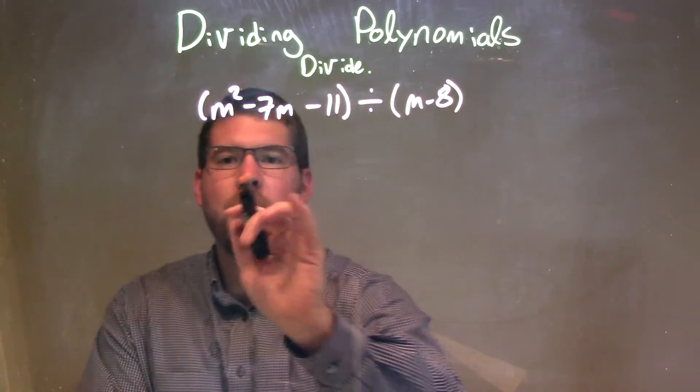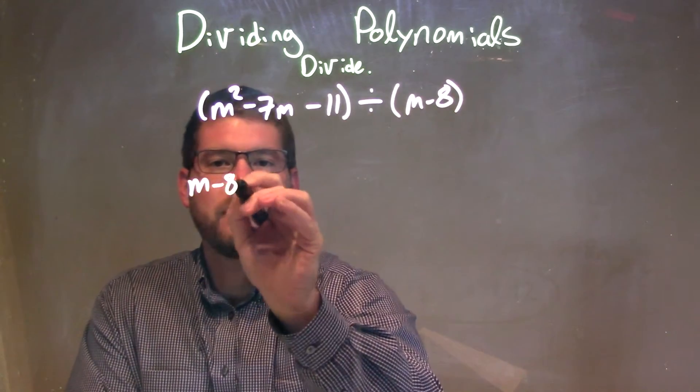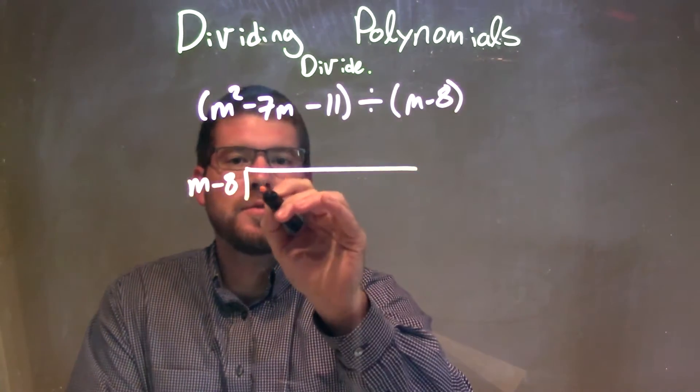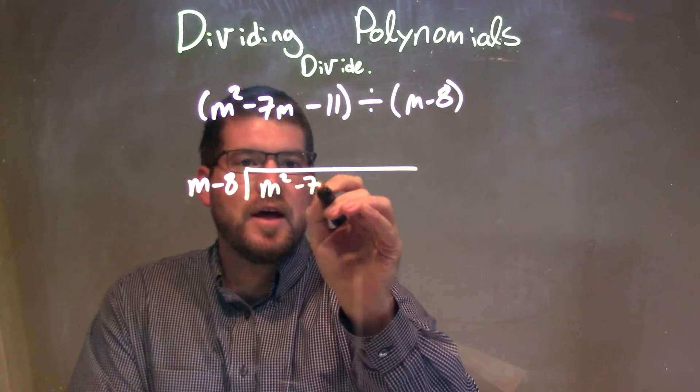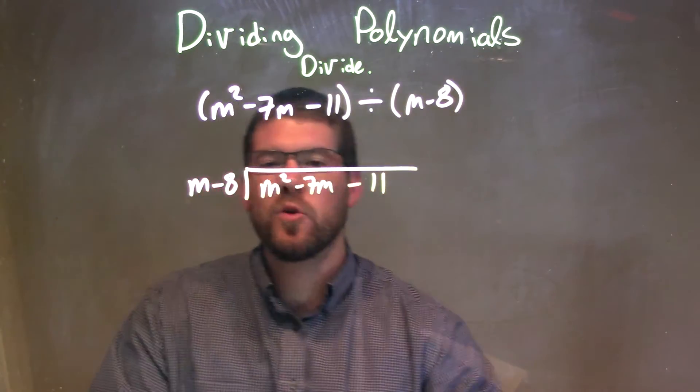I'm going to do some long division here. I'll write m minus 8, and then we go into m squared minus 7m minus 11, just like normal long division.